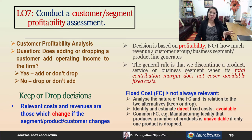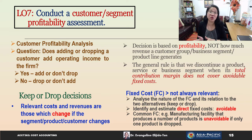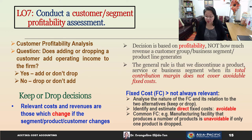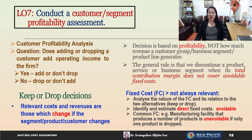That's the key — fixed costs are not always relevant. It's only the avoidable fixed costs that we need to consider. So it's important to analyze the nature of fixed costs and their relation to the two alternatives: keep or drop. We also need to identify and estimate direct fixed costs, which are usually avoidable.